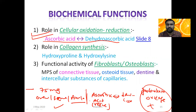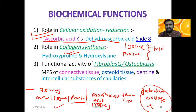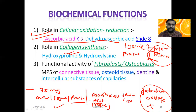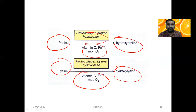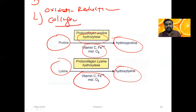A very important function is collagen synthesis. Vitamin C is required for the conversion of lysine and proline to hydroxylysine and hydroxyproline. This hydroxylation enables interchain hydrogen bond formation, providing stability to the collagen structure. This is important for the functional activity of fibroblasts, osteoblasts, connective tissue, bone tissue, and dentine. The enzyme involved is prolyl/lysyl hydroxylase.